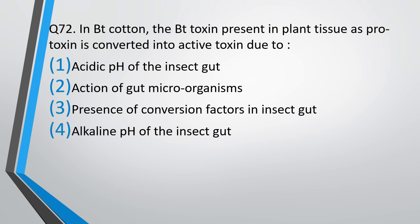Question number 72. In BT cotton, the BT toxin present in plant tissue as protoxin is converted into active toxin due to: acidic pH of the insect gut, action of gut microorganisms, presence of conversion factors in the insect gut, or alkaline pH of the insect gut. The correct answer is option 4 — alkaline pH of the insect gut.